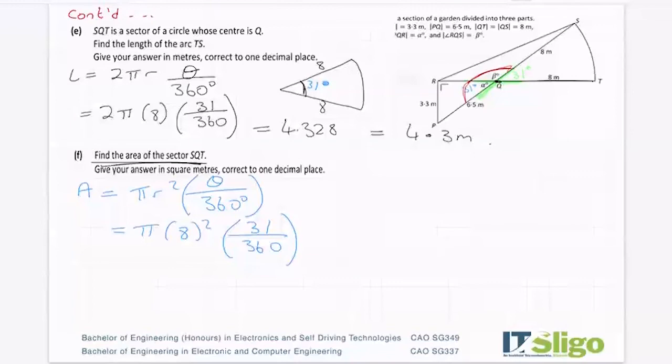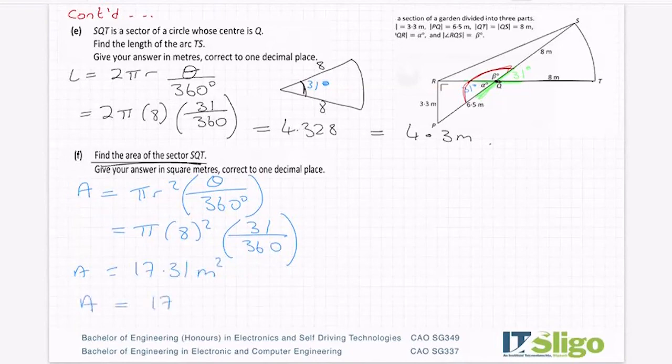So shift by 10x to get my pi by 8 squared, multiply by, hit the fraction button, 31 over 360. And I'm getting 248 over 45 pi for that. Or 17.31 meters squared, squared because it's area. Or 17.3 meters squared. So important that you know how to get the arc and the area of a sector comes up more often than you think on the course. So very good to be able to do that one.